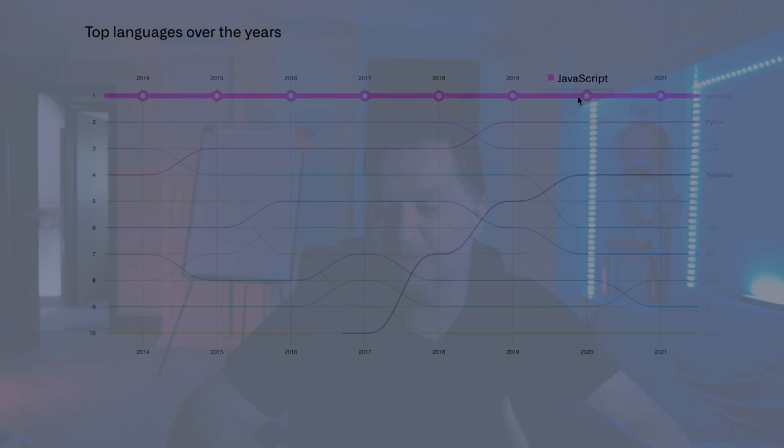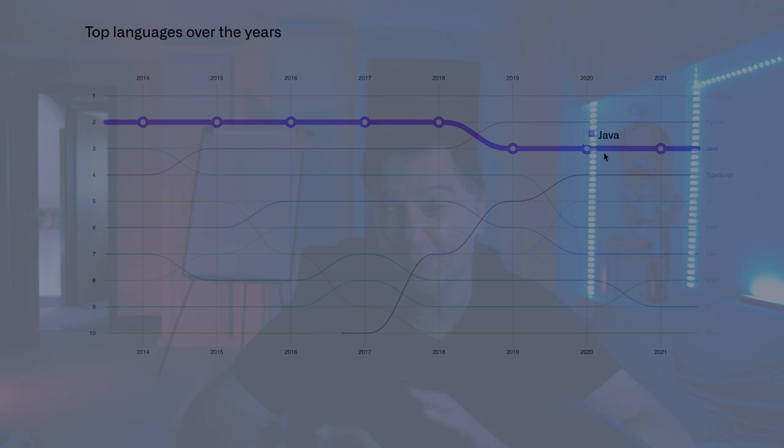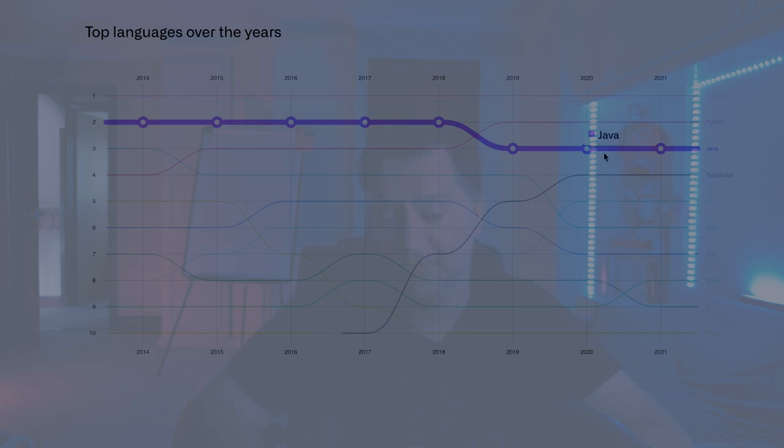Raison d'être alone is probably not enough, because that reason to exist will also change over time. JavaScript's raison d'être hasn't changed. Python's simplicity and beauty hasn't changed. Java's has probably evolved. TypeScript's raison d'être hasn't changed. C# still primarily exists to support .NET — that hasn't changed.